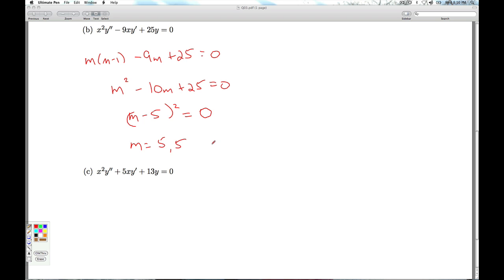Now if we think back to constant coefficient equations, when we had a double root, we would multiply by a factor of x to remove the duplication. Here in Cauchy-Euler, we would multiply by a factor of natural log x to remove duplication. So I'm going to have then for my final answer c1 x to the fifth plus c2 x to the fifth natural log x.